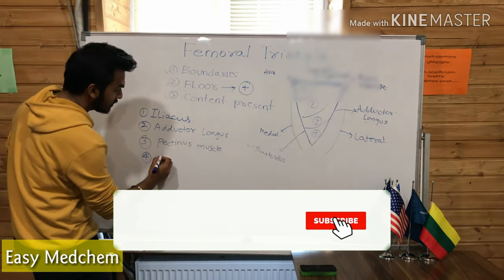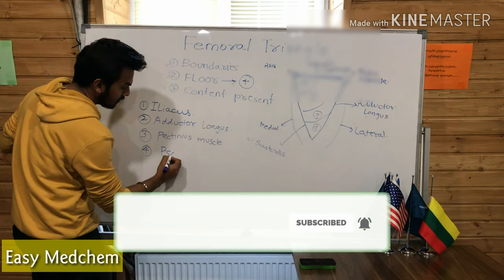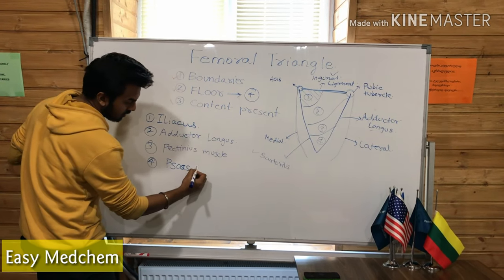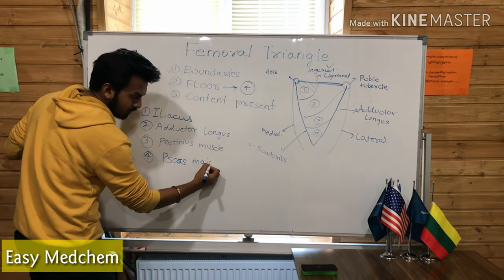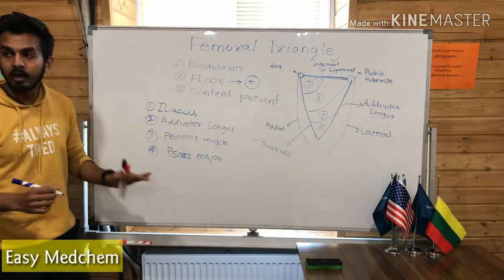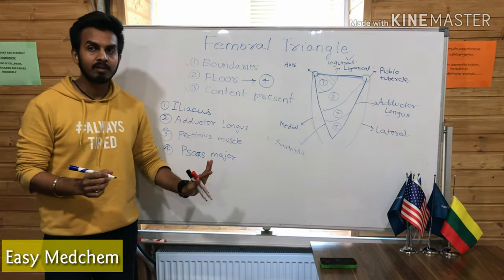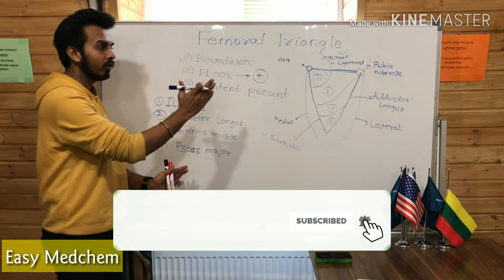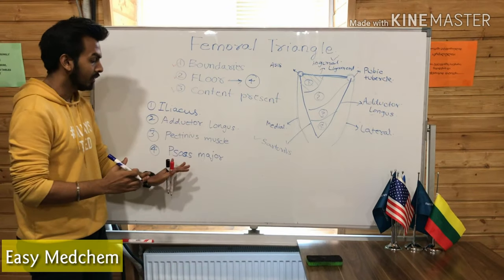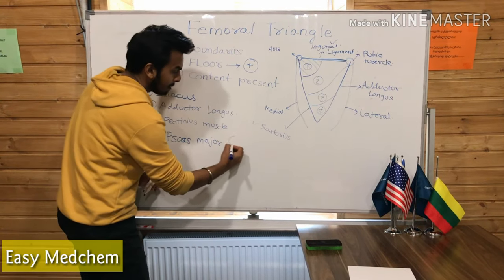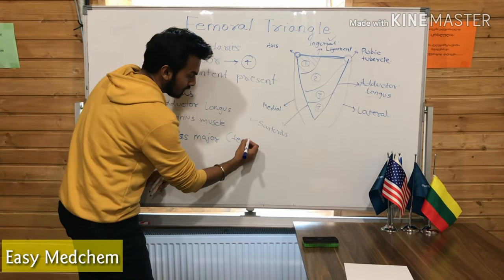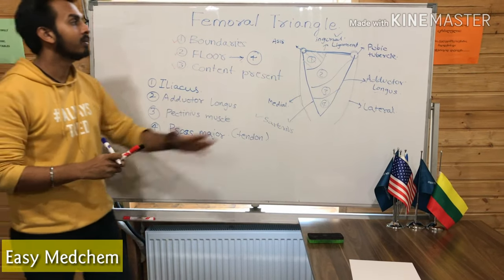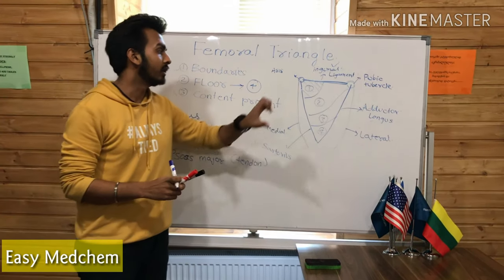The fourth muscle is the swasmeasur. Actually, the tendon of the swasmeasur is present here — not the muscle, but it is a tendon which is making the floor of the femoral triangle, which is the swasmeasur tendon. So these are the four muscles which are making the floor of the femoral triangle.